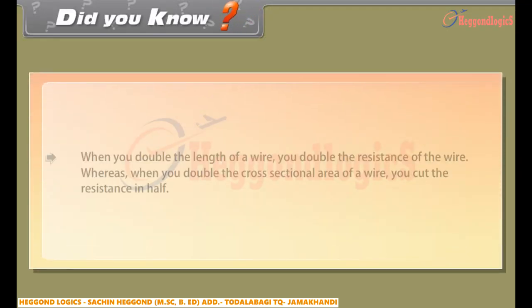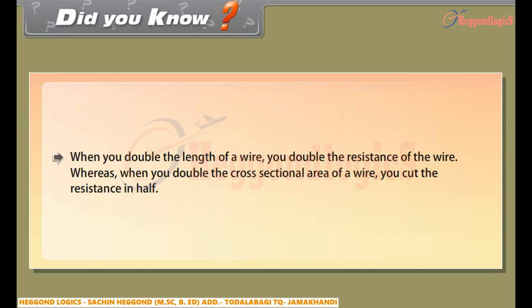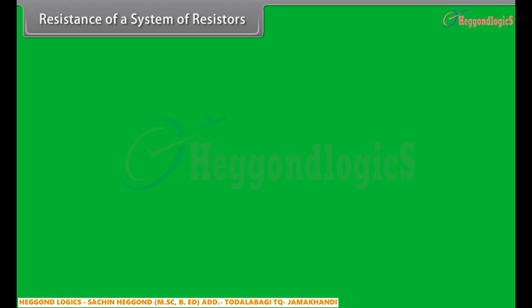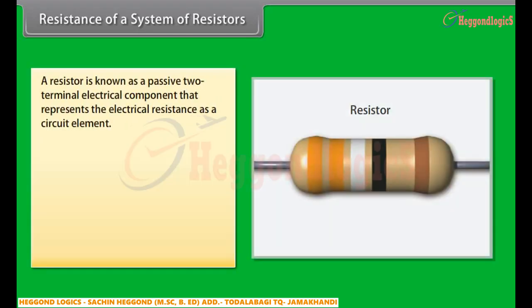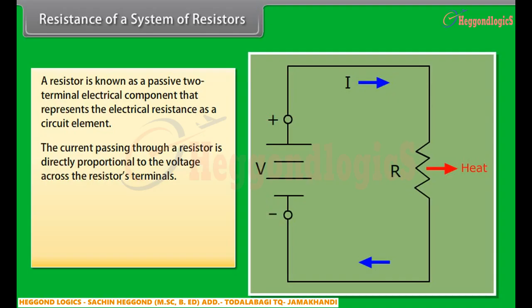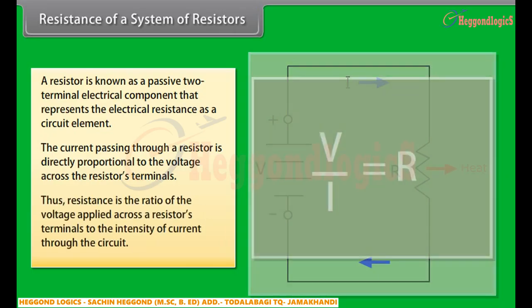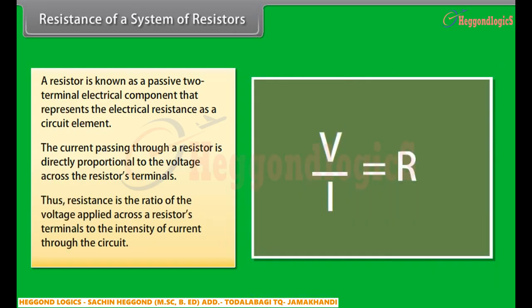Did you know? When you double the length of a wire, you double the resistance of the wire. Whereas when you double the cross-sectional area of a wire, you cut the resistance in half. A resistor is known as a passive two-terminal electrical component that represents the electrical resistance as a circuit element. The current passing through a resistor is directly proportional to the voltage across the resistor's terminals. Thus, resistance is the ratio of the voltage applied across a resistor's terminals to the intensity of current through the circuit.